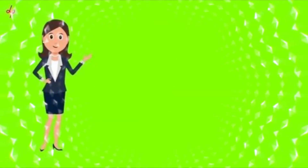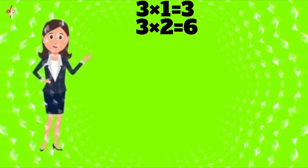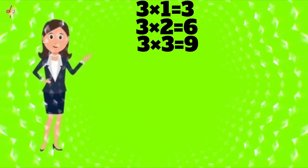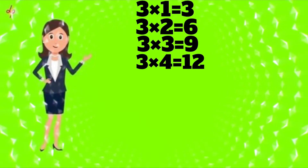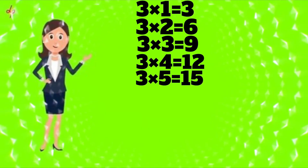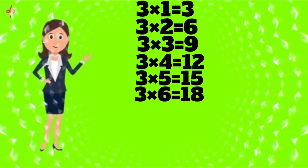Three one's a three. Three two's a six. Three three's a nine. Three four's a twelve. Three five's a fifteen. Three six's a eighteen.